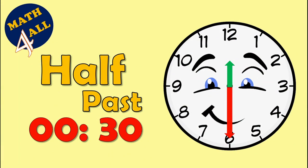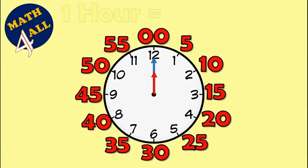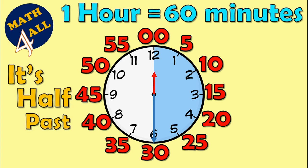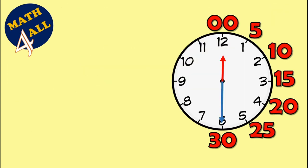Half past — one hour equals 60 minutes, so half of an hour equals 30 minutes. When you see the long hand on 6, you will say it's half past. It means half of an hour or 30 minutes. Can you read this clock? Look here — the short hand is on 12 and the long hand is on 6.